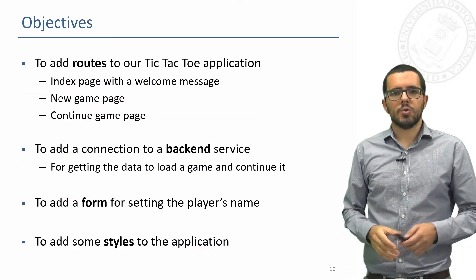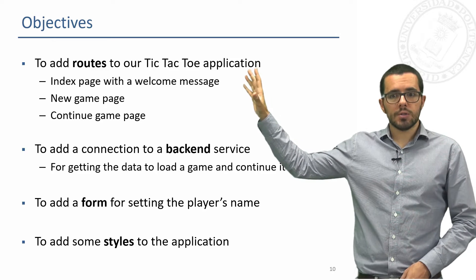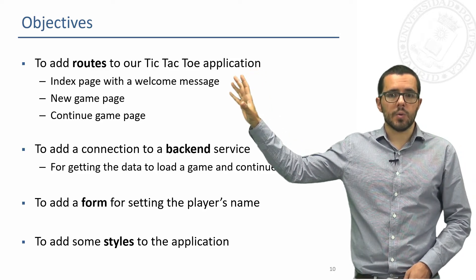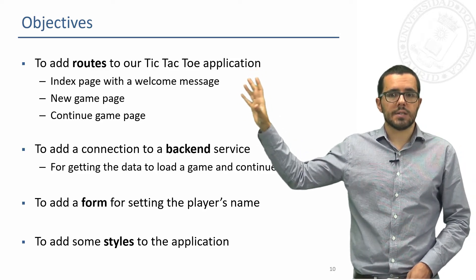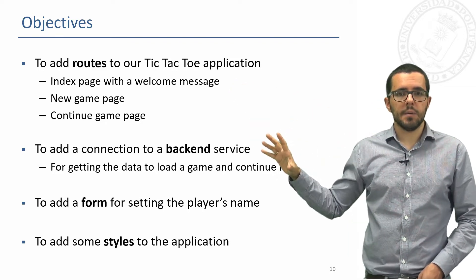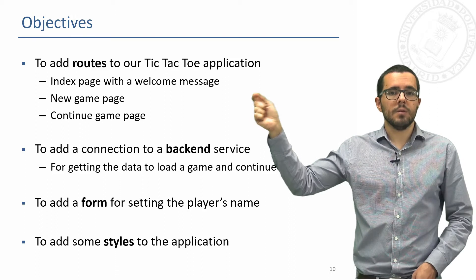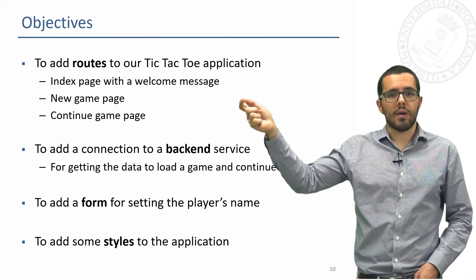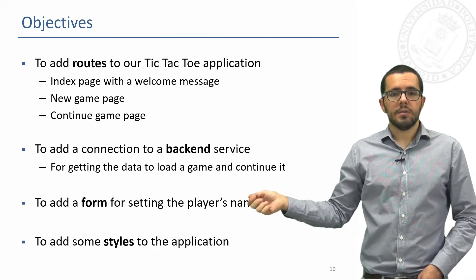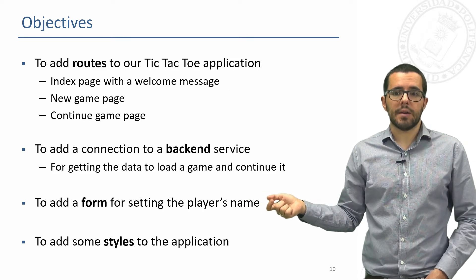Just to summarize very briefly: we will add routes to our tic-tac-toe application — three routes: index, new game, and continue. We will add a backend service call, an AJAX call to a backend where we will have a saved game, and a form for the user to set the player name.